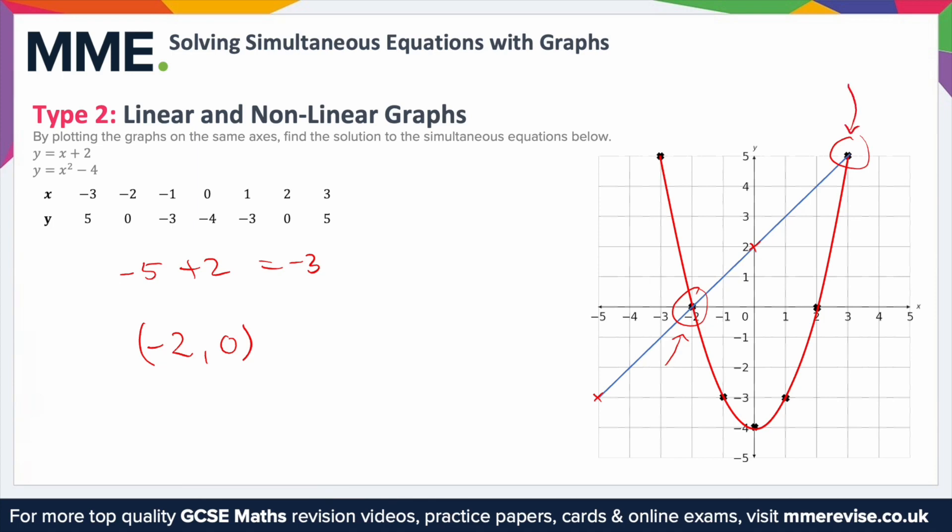We have another solution here where they meet again. This is a little bit harder to read, but all you need to do is come down to the x-axis. That's at 3. So it's going to be 3. And then figure out the y-coordinate by going like this. So it ends up at 5. So 3, 5.